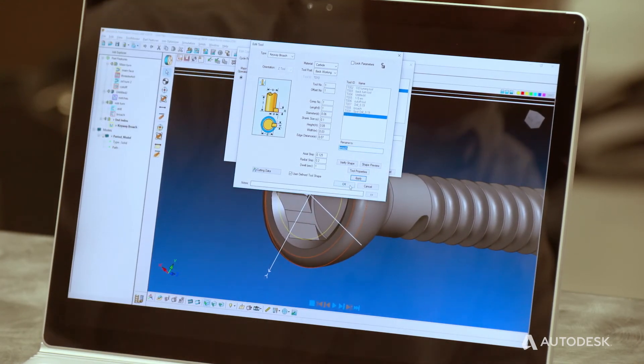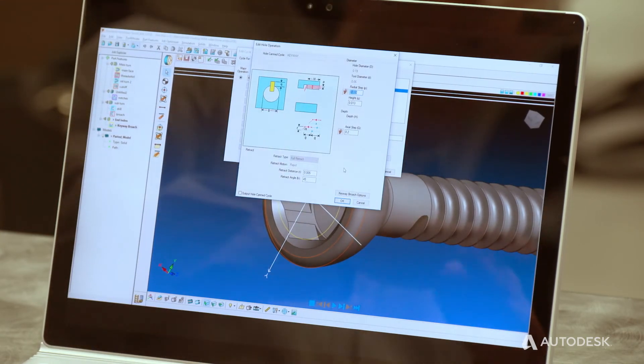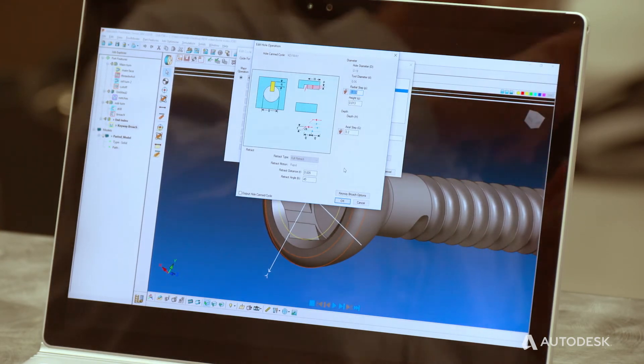Once we've got our shape defined, we then can go into our process and we can define how we want to axially or radially peck on the part. And then also a lot of times when you're broaching, you end up with a burr in the bottom of your part. Well, one of the things that we do here is we enter the part and when we exit, we have an exit angle. So we can help push that burr out of the part.